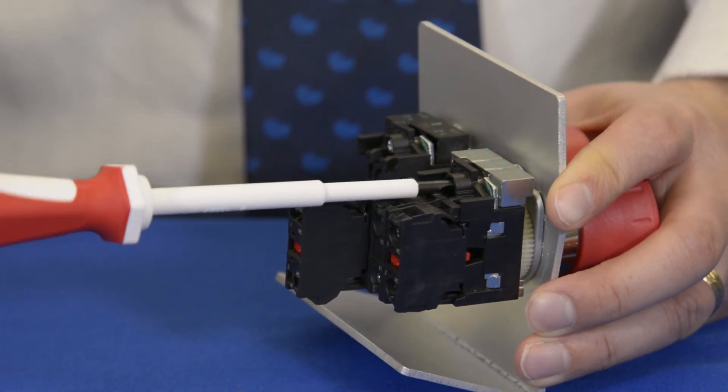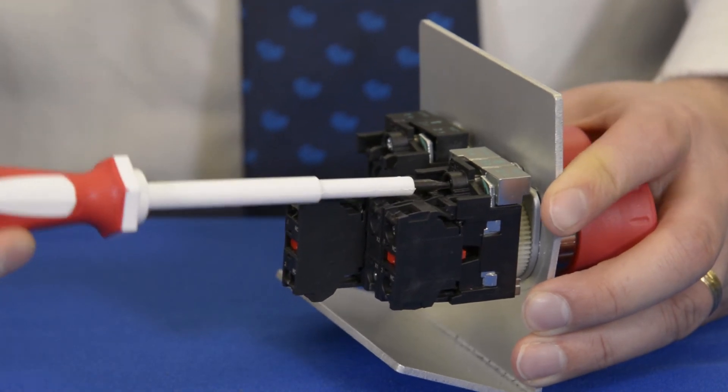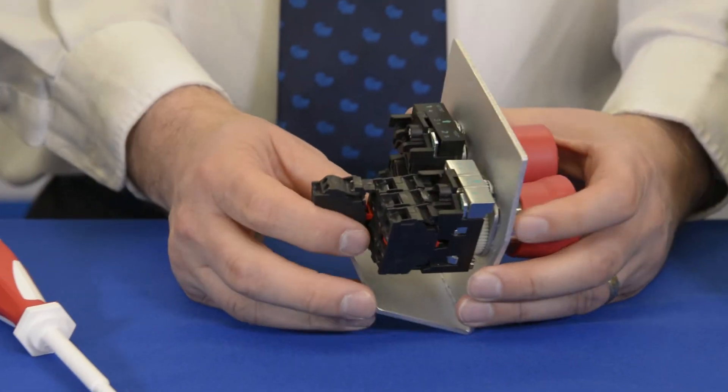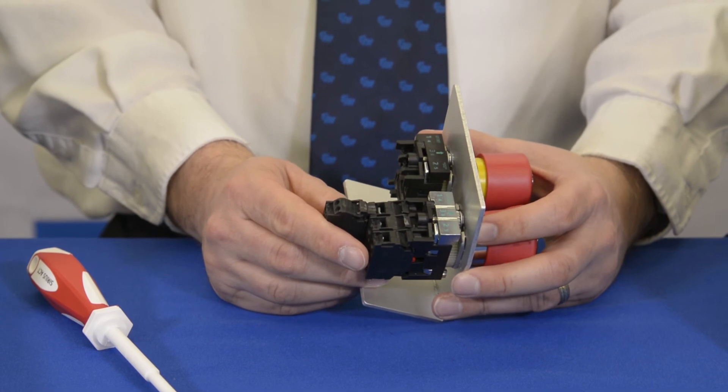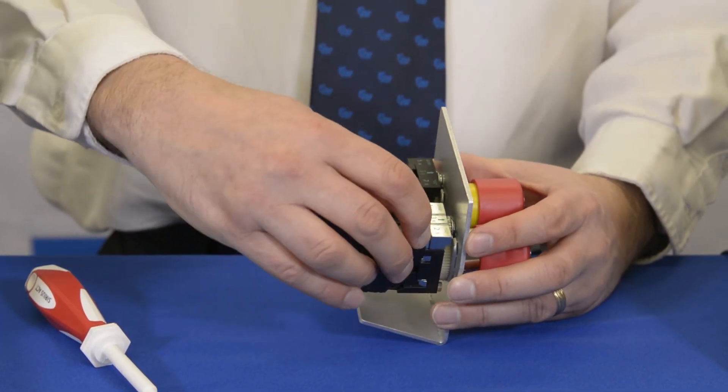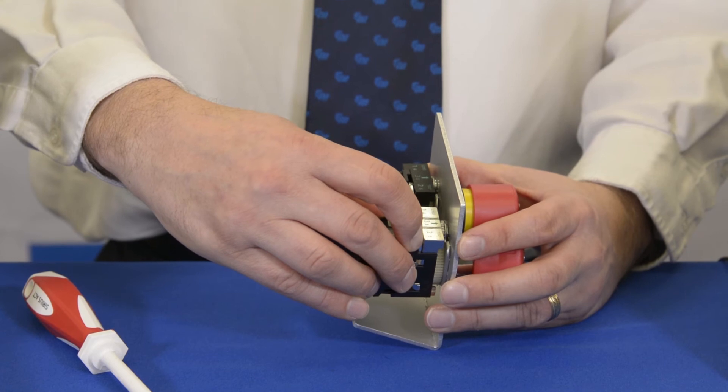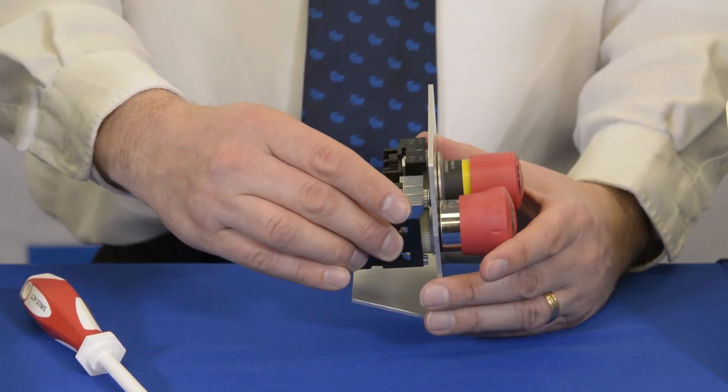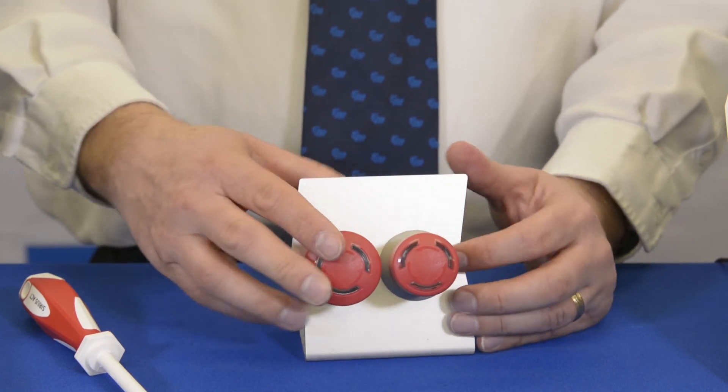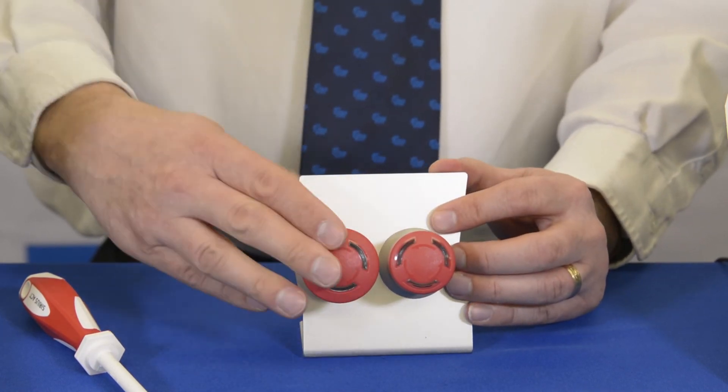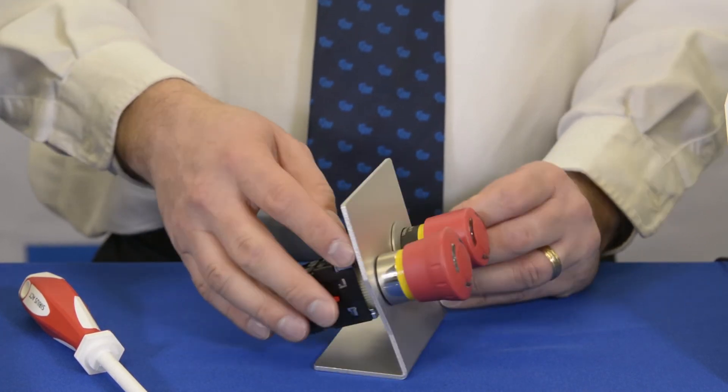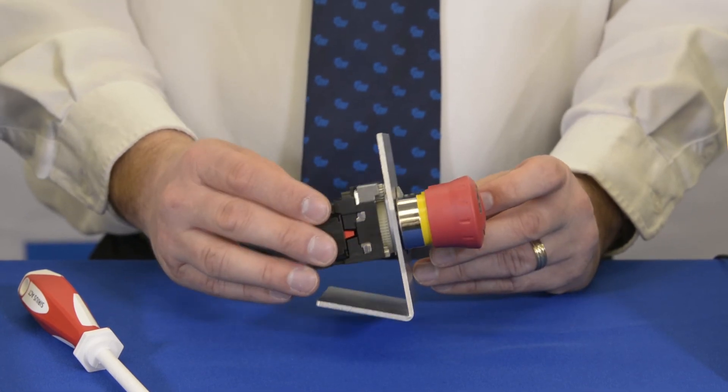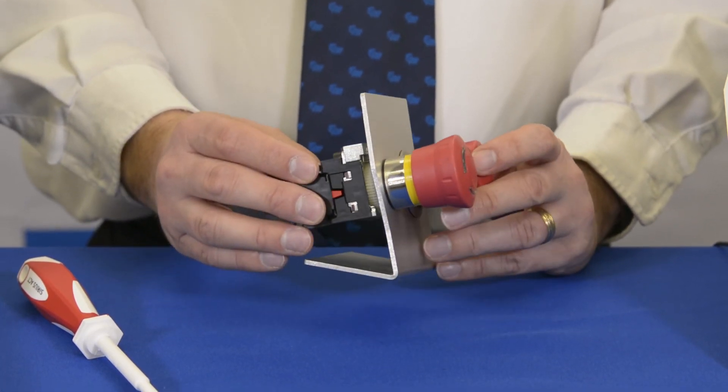When this screw is tight, a couple things happen. Number one, I've just grounded that assembly together. I've also made it so that that latch mechanism will no longer allow me to release the contact blocks from the back of the operator. And furthermore, this happens to be a twist-to-release device. Over time, this is not going to come loose. So you won't have to worry about those wires getting tangled up like our competitors.